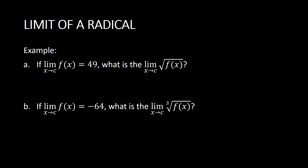For example, if the limit of f(x) as x approaches c is 49, what is the limit of the square root of f(x) as x approaches c? We move the limit inside the radical, giving us the square root of the limit of f(x), which is the square root of 49. That is equivalent to 7.